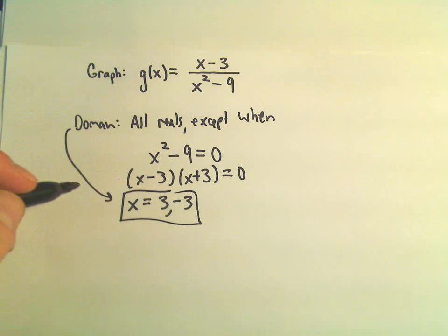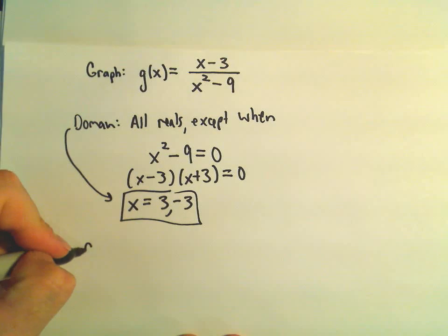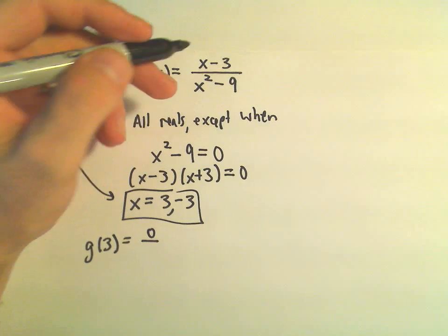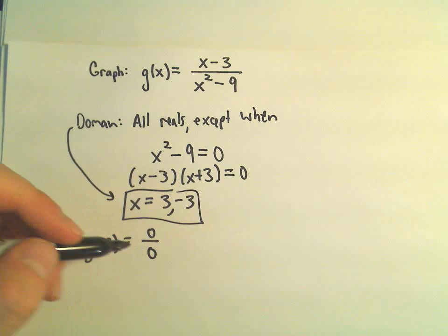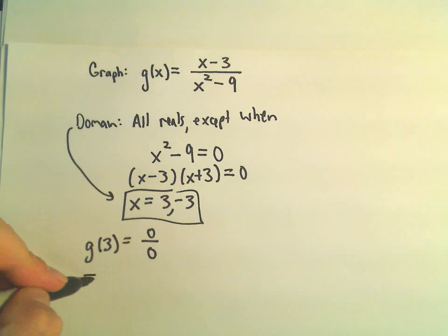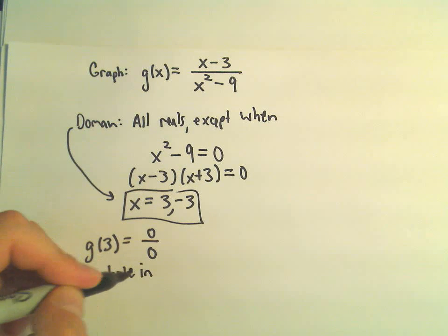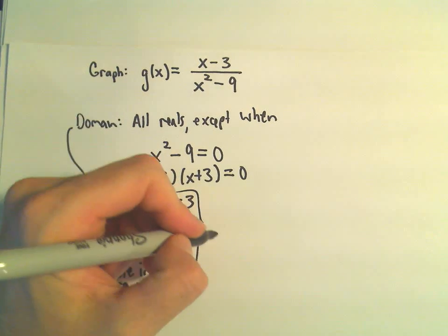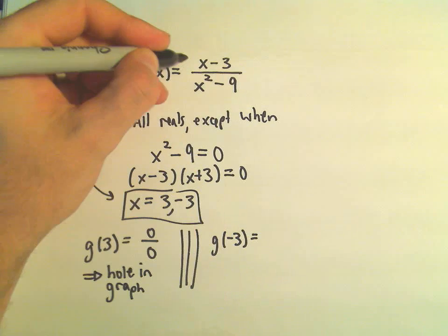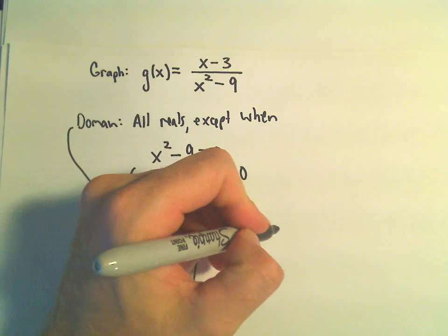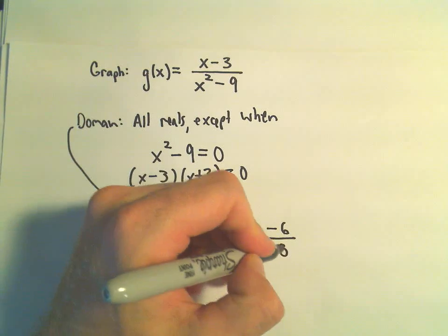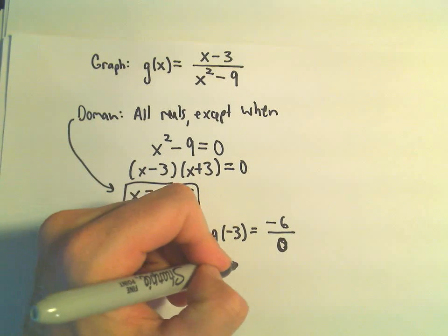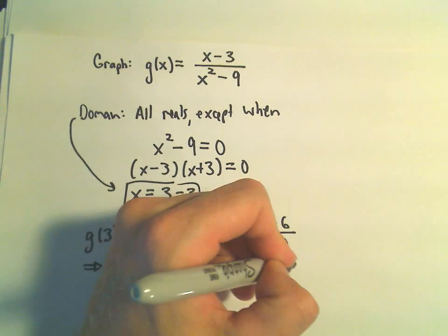Notice a couple of things. If we plug 3 back into our original formula, we get 0 on top and 0 on the bottom, which makes it undefined. But if we get 0 over 0, that means we just have a hole in our graph. Notice if we plug in negative 3, in the numerator we get negative 3 minus 3, which is negative 6, and in the denominator we get 0. A non-zero number over 0 means we have a vertical asymptote at that point.